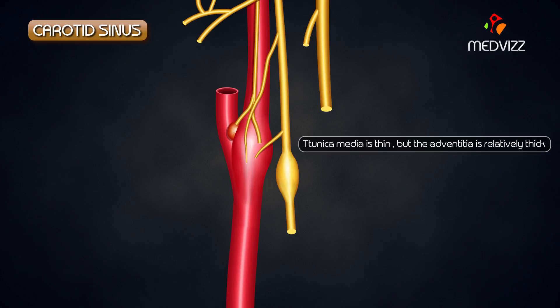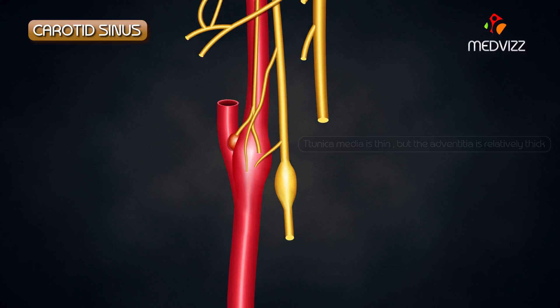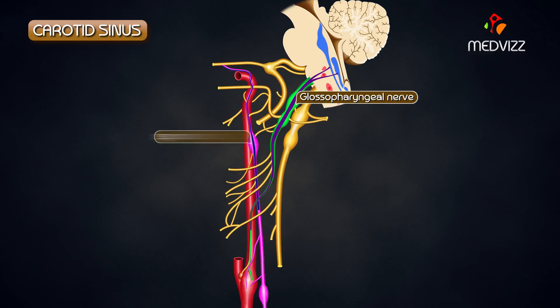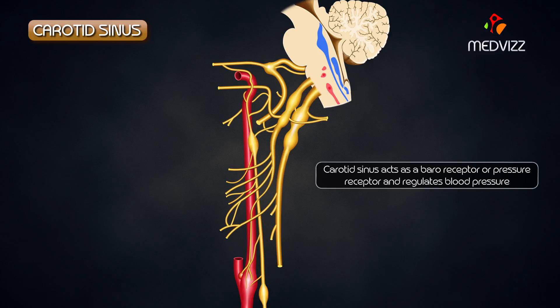The tunica adventitia is relatively thick compared to that of other arteries present in the body. It receives rich innervation especially from the glossopharyngeal and sympathetic nerves. The carotid sinus acts as a baroreceptor, or a pressure receptor, and it regulates blood pressure.